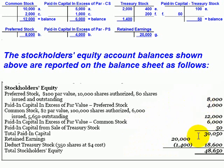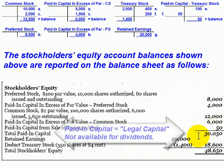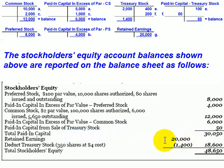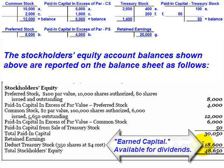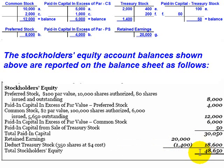The total paid-in capital of $30,050 represents the legal capital of the corporation. The earned capital is reported via retained earnings, which has a balance of $20,000 from our closing entry. However, the balance in treasury stock represents a distribution of this earned capital when the treasury shares were purchased. We may regain this $1,400 upon reissuance of the shares. Presently, the net balance in retained earnings is $18,600, and the total stockholder equity is $48,650. This ends the video presentation.